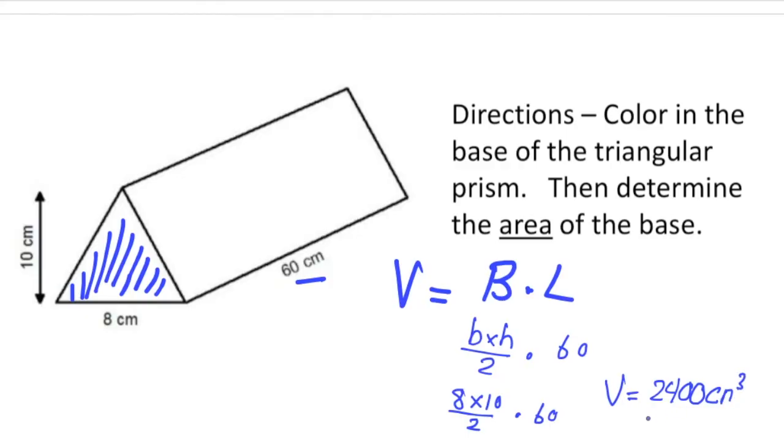All right, so the key thing to remember about this is to find the volume of a triangular prism, you take the area of the base and multiply it by the length. All right, so why don't you pause the video and try the your turn now problem, and when you're done hit play and you can see how you did. All right, good luck.